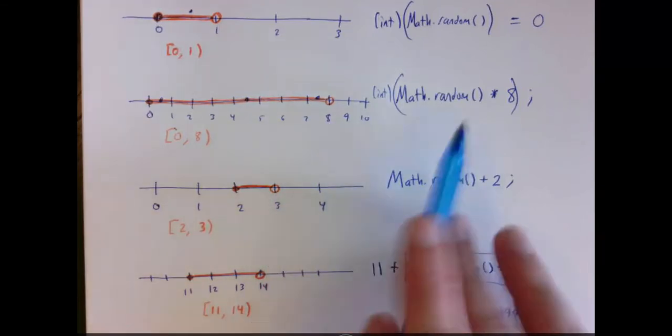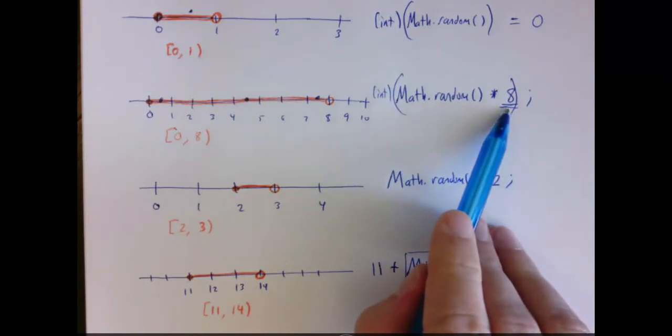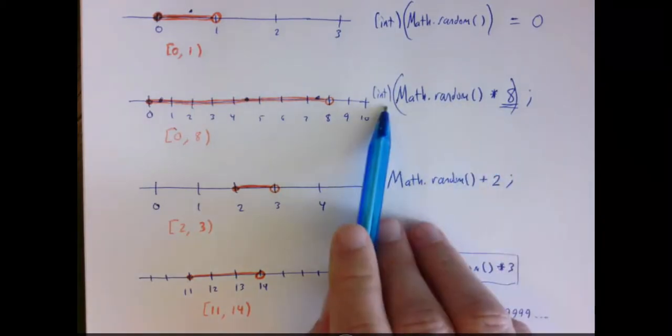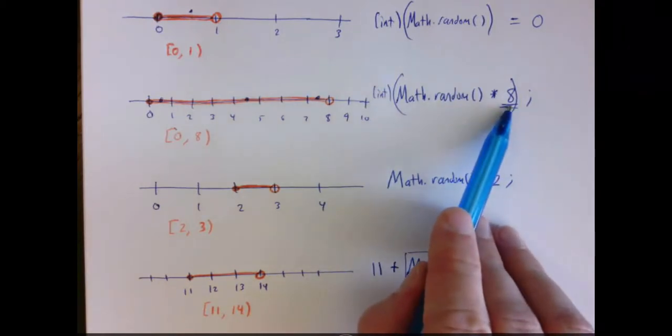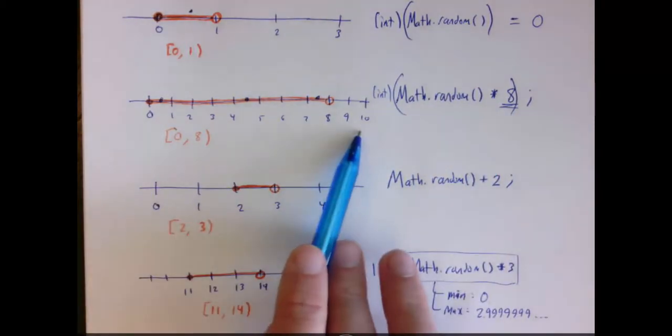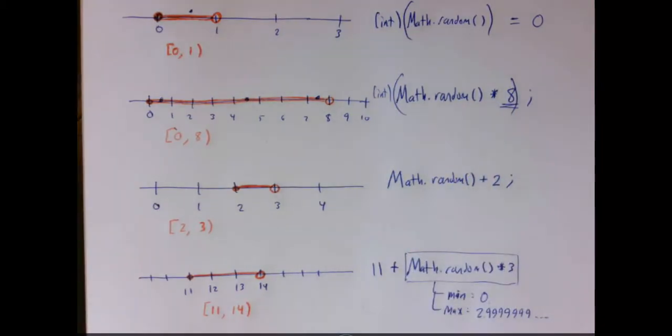So that's why there's this kind of rule that you can think about where whatever you're scaling by, if you're casting the expression to an int, this is one larger than the largest integer that you're ever going to get. So if I want to get integers between 0 and 10, I would need to scale by 11 instead of 10. I hope this has helped you think a little bit about Math.random.